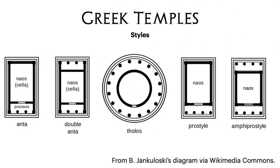Here are a few of the simplest styles. The one that stands out is the tholos, the one in the middle, which is round in shape. There are some of these round temples around, but most of the time we're going to see rectangular ones. The two on the left, the anter and the double anter, are called that because they have walls out the front of the naos extending to make a bit more of a sheltered porch — they've got walls on the sides but are open at the front with columns. And if they don't have those walls extended and just have columns at the front and possibly back, they're referred to as prostyle. Pro means in front, so the columns are in the front.